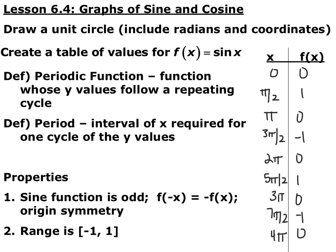For example, if we look at f(x) = sine of x and the quadrantal angles — basically every 90 degrees — 0, π/2, π, 3π/2, 2π, that would be one trip around the circle.